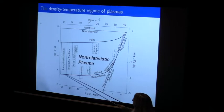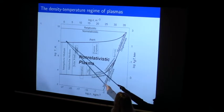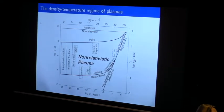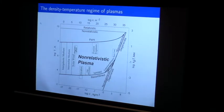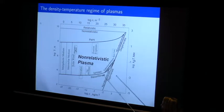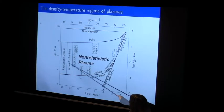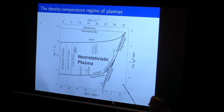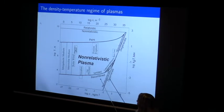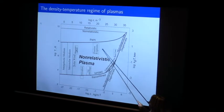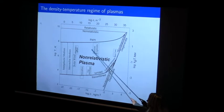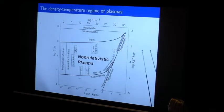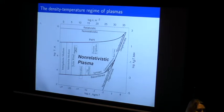Most plasmas where the ideal MHD limit applies are fully ionized — meaning neutral species don't dominate the dynamics. This applies to basically all interesting problems related to the intergalactic and interstellar medium, the solar wind, and even laboratory regimes like fusion experiments operating at reasonably high temperatures. Going very hot, you start to get into relativistic plasmas.